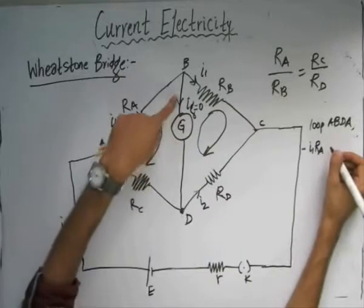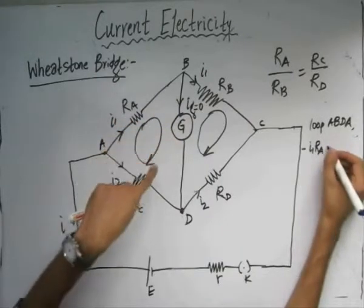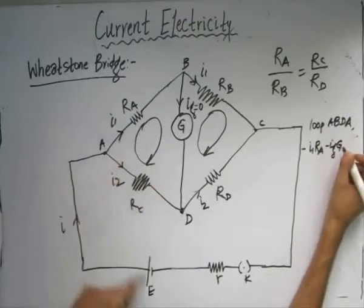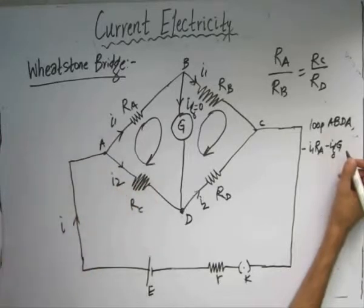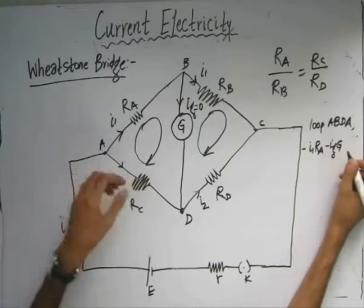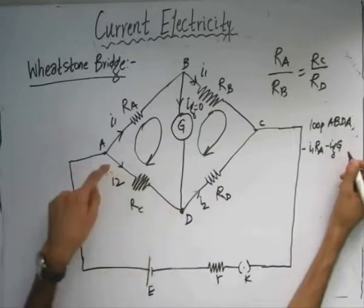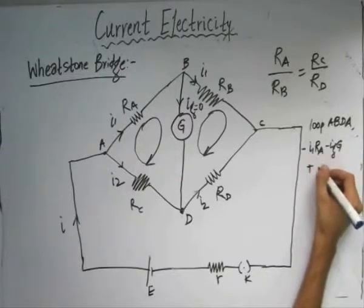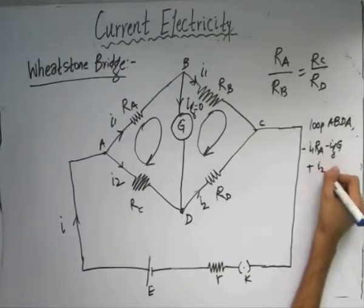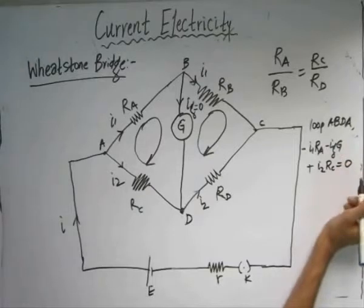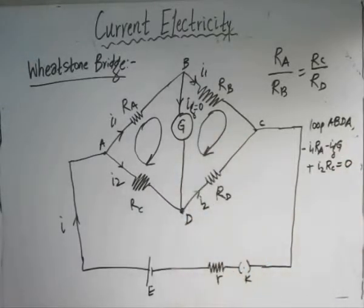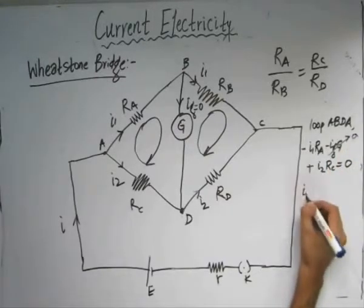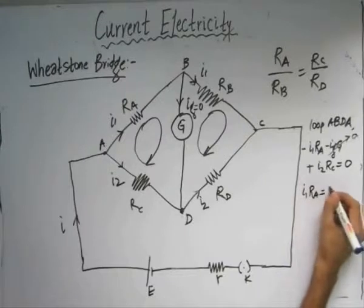For the galvanometer, the current through it and the loop direction are the same, so again negative: minus IG times G. Here, the direction of the current and the direction of the loop are in opposite directions — one is from bottom to top and the current flows from top to bottom — so the potential drop is positive: plus I2 times Rc equals zero. Since the deflection in the galvanometer is zero, that term goes to zero, giving us I1·Ra = I2·Rc.